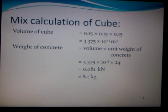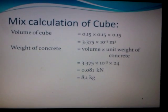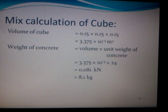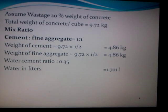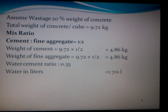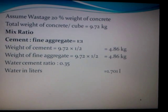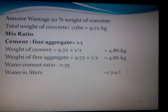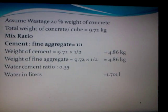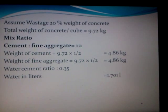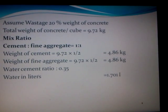Mix calculation: the sample cube is 150 by 150 mm. The unit weight of the concrete is about 8.1 kg. We have used a trial and error method since no standard mix ratios are available for lightweight concrete. For a mix ratio of 1:1, the weight of cement is 4.86 kg, weight of fine aggregate is 4.86 kg, and the water-cement ratio is 0.35.